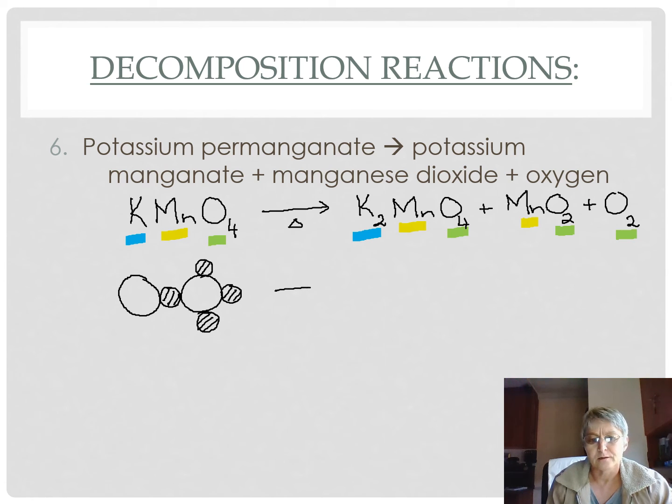That forms a substance where a permanganate becomes a manganate, and now the 4 oxygens around the manganese has 2 potassiums joined to it. Now,